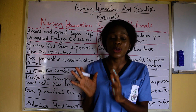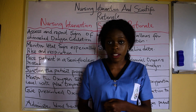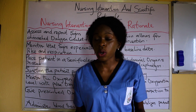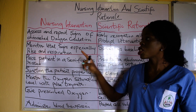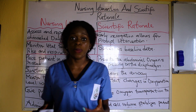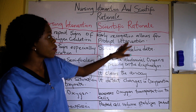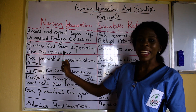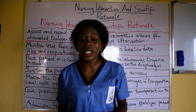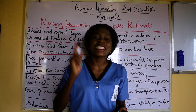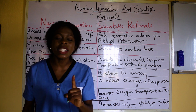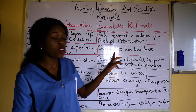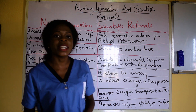The next set of nursing interventions can be applied to ineffective breathing pattern, ineffective airway clearance, and ineffective tissue perfusion. The first, as always, is to assess and report signs of diminished oxygen circulation — especially for ineffective tissue perfusion — because early recognition allows for prompt intervention. Another intervention is to monitor vital signs, especially pulse and respiration, because anything related to breathing requires close monitoring of vital signs. Both serve as baseline data.